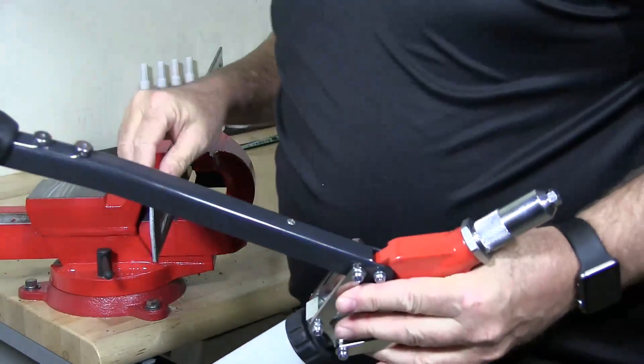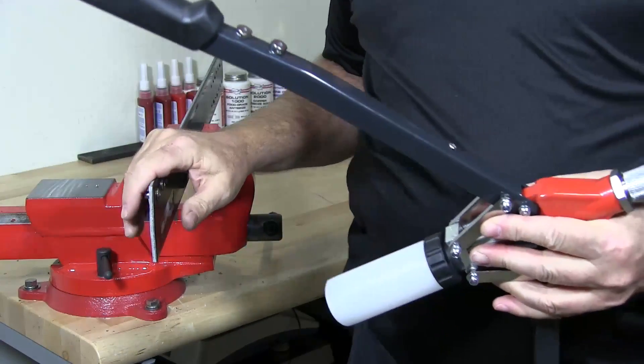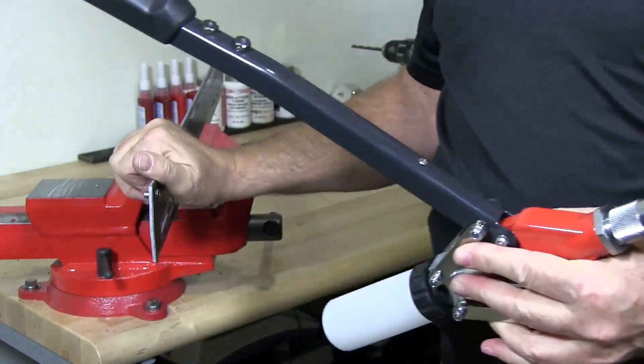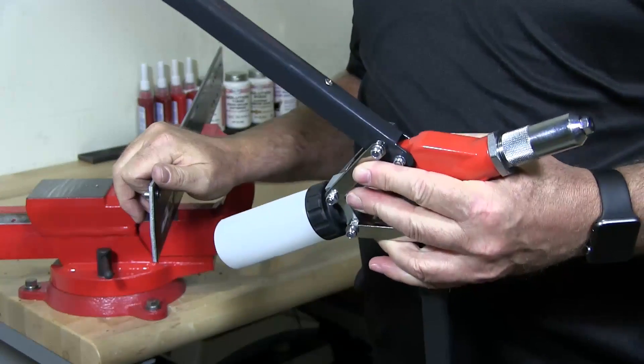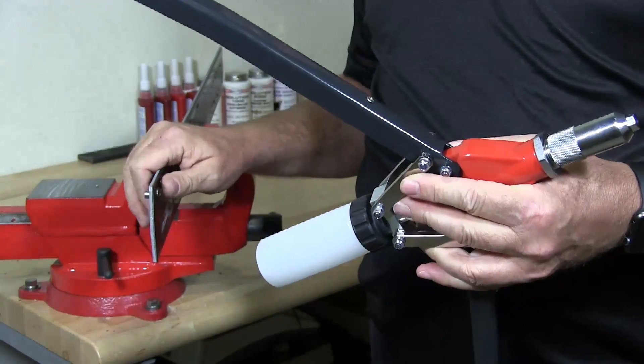So I put three of them in. All three are tightly fastened. This is three-eighths piece of steel. This is only for demonstration purposes to show you how this tool can install your rivets very effectively.